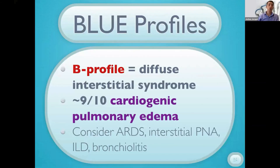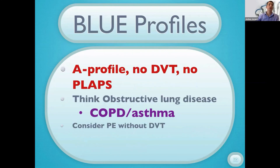Profile one is the B profile — diffuse interstitial syndrome, meaning three or more B lines diffusely throughout the lung. Nine times out of ten that's cardiogenic pulmonary edema, but other entities can produce this: ARDS, interstitial pneumonia, interstitial lung disease, bronchiolitis. There are nuances to differentiate these that we won't cover in this 20-minute lecture. B profile — think diffuse interstitial syndrome, most often CHF or cardiogenic pulmonary edema.